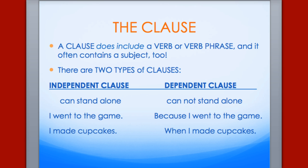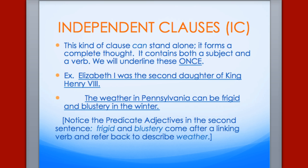Take a look at the two types of clauses: independent clauses and dependent clauses. A good way to think about dependent clauses is: if I were to run up to you in the hall and say 'because I went to the game' or 'when I made cupcakes,' I often leave you wanting more information — it's clearly an incomplete thought, and therefore an incomplete sentence. A dependent clause punctuated by itself is simply called a fragment. Independent clauses can stand alone; they form complete thoughts, usually contain subjects, and always contain verbs — and we're going to underline these once.